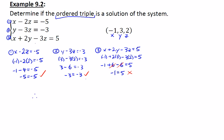Our conclusion then, therefore, the ordered triple negative 1, 3, 2 is not a solution of the system.